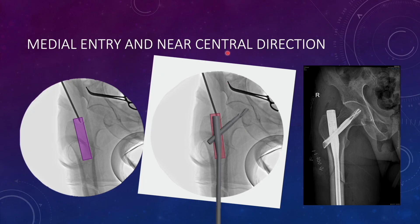If the entry is medial and directed towards the canal, the track created will be almost vertical, and when the nail is inserted the proximal part will occupy this space — resulting in good alignment. The distal part of the nail will match the axis of the remaining shaft, and the proximal part will either be in line with that axis or in slight valgus. In subtrochanteric fractures it is preferable to achieve some valgus if you are not getting anatomical alignment. This will be the outcome when such an entry point is chosen and the direction is towards the canal.